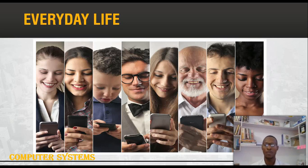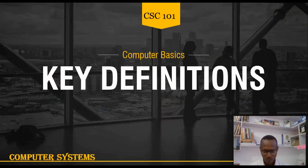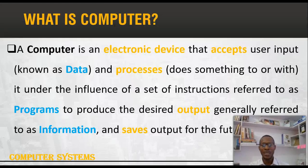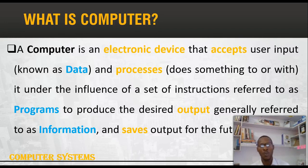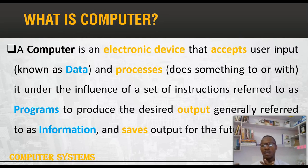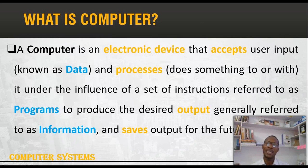Now, a key definition: a computer system, as the name implies, can be called a device that receives user input, which is data. These data are then processed based on a set of instructions called a program, that help us to produce the desired output called information. A computer also stores that output for future reference. In other words, a computer receives data, stores that data, or processes the data to get desired information.